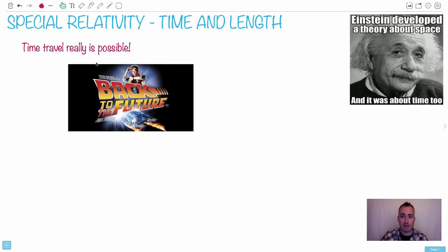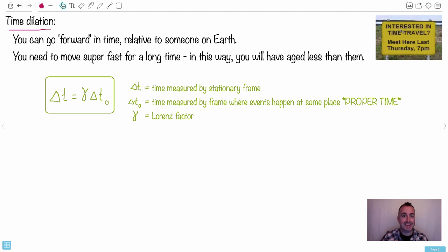I loved it. It's an 80s movie. Well, they made three of them with Michael J. Fox. Awesome movies. But in any case, we're going to talk about what relates to Einstein here. Einstein developed a theory about space and it was about time too. So we're going to learn actually how time travel really works. Like this interested in time travel? Me here last Thursday.